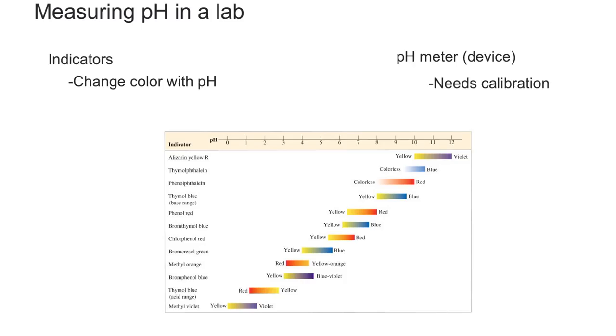In this video I'm going to explain two techniques to measure pH in a lab. First, the classic way to measure pH in a lab setting is by using indicators.